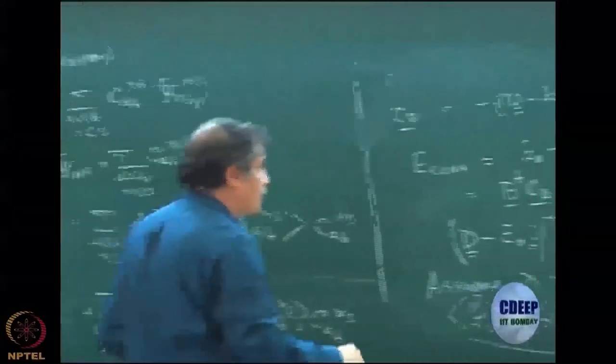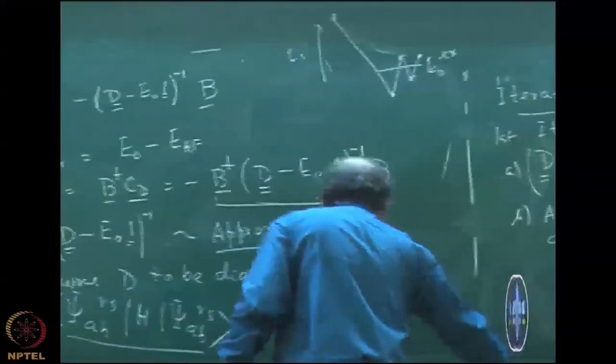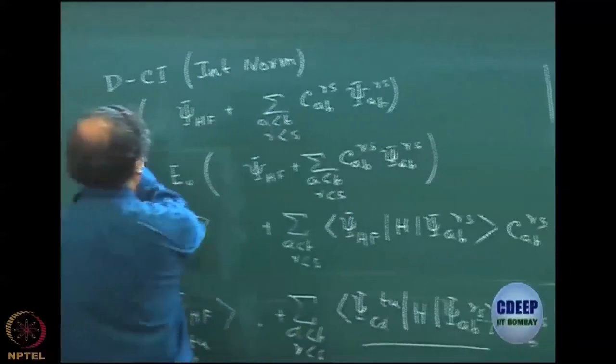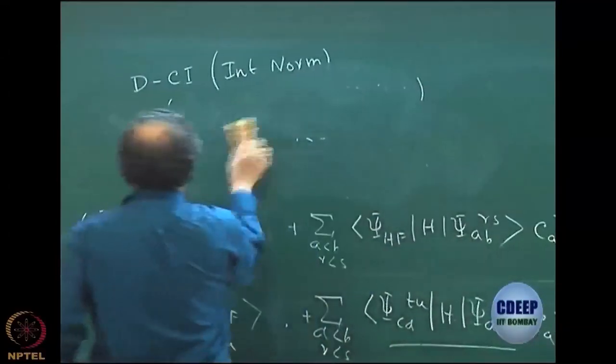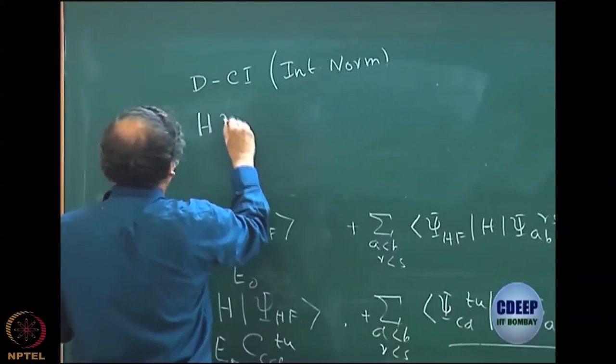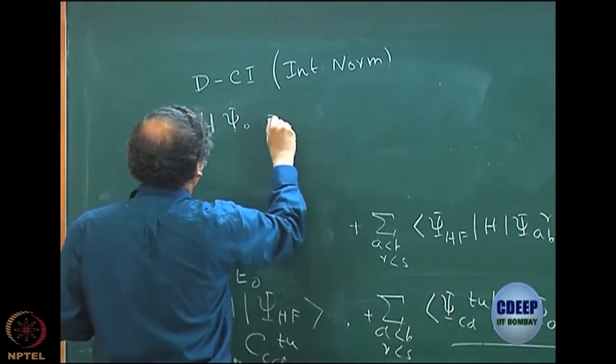Let me also write the same CI equation by actually subtracting E Hartree-Fock from the beginning. So let me write this equation a little bit differently. My Schrodinger equation was H psi0 equal to E0 psi0, right?